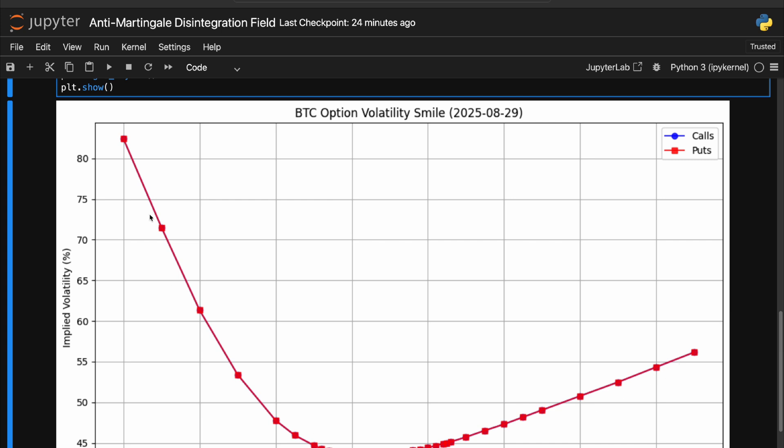So you have the same implied volatility for calls and puts, which is essential. Otherwise, you would have arbitrage opportunities. So this chart is containing both calls and puts here.